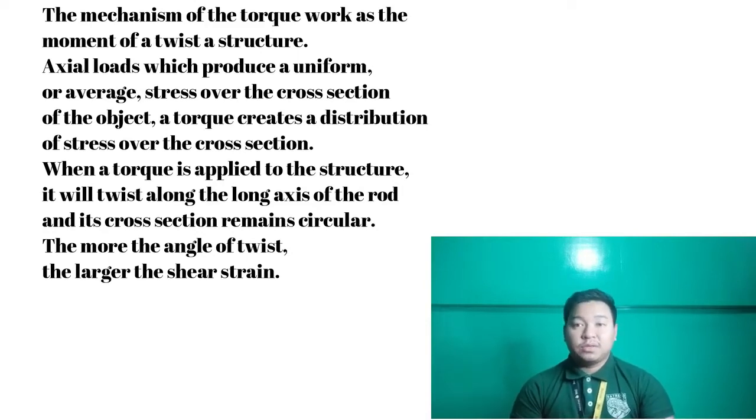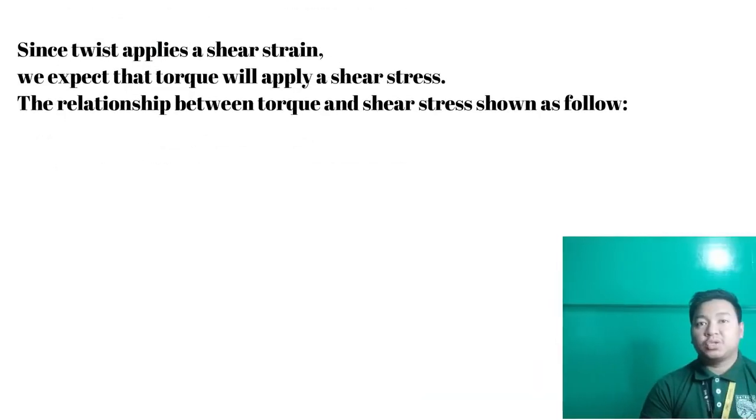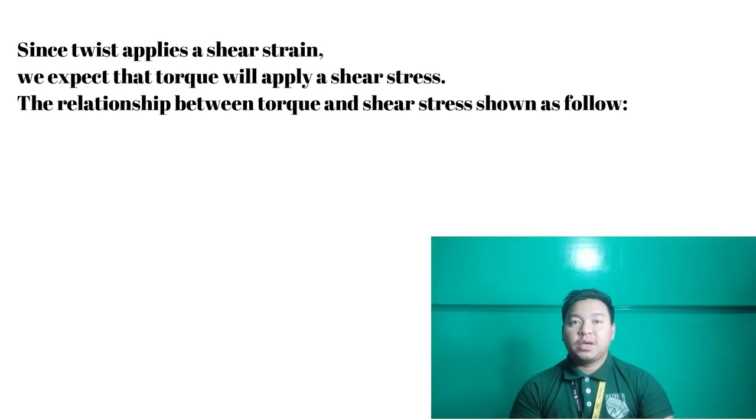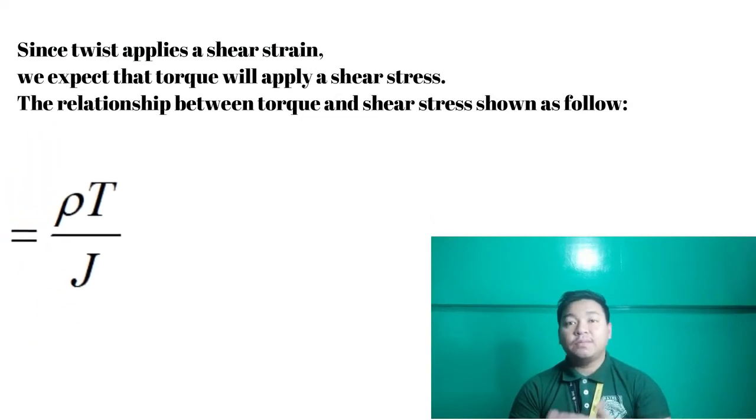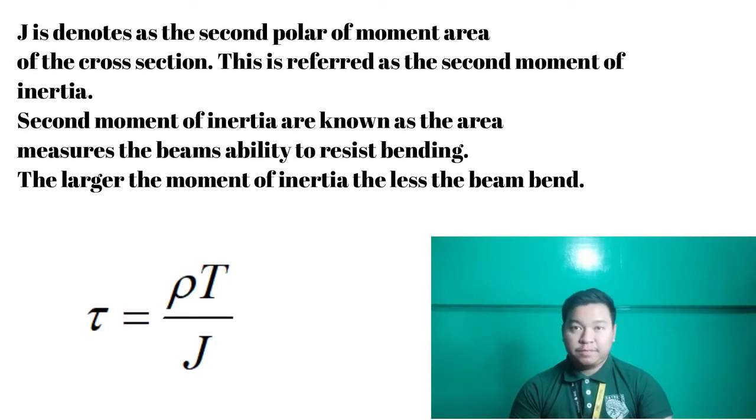Hence, when a torque is applied to the structure, it will twist along the long axis of the road and in cross section remains circular. To simplify it, we can conclude the more the angle of twist, the larger the shear strength. Since twist applied a shear strength, we expect that the torque will apply shear stress. The relationship between torque and shear stress shown as follows, which is J is denoted as the second polar or moment area of the cross section. This is sometimes referred to the second moment of inertia. Second moment of inertia are known as the area measured to the beam ability to resist bending.